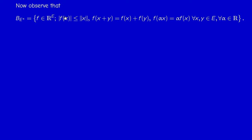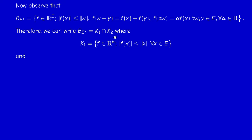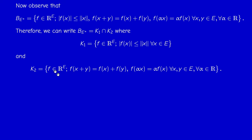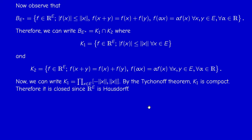We write B(E*) as the intersection of two sets. K1 embeds the condition |F(x)| ≤ ‖x‖ for all x in E — note this does not assume linearity. K1 is actually a product of closed intervals [−‖x‖, ‖x‖], so it is a product of compact spaces. By the Tychonoff theorem, K1 is itself compact, and therefore closed, since R^E is Hausdorff as a product of Hausdorff spaces.